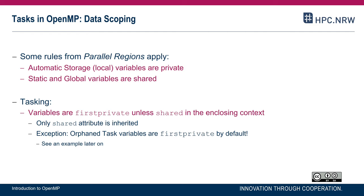So what is different? When a task is encountered, the runtime has two choices. The task can be executed immediately, or it can be deferred — meaning execution is deferred and the task will be executed at some point later, possibly by a different thread. This poses the requirement that the task has access to all its data that it needs for correct execution.